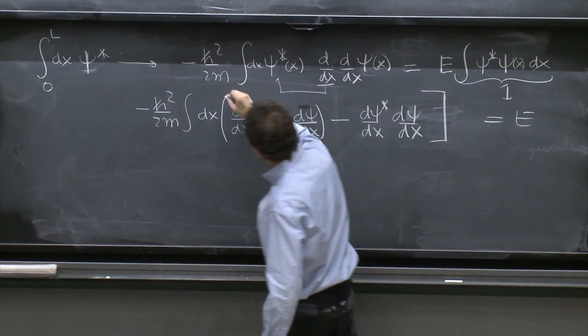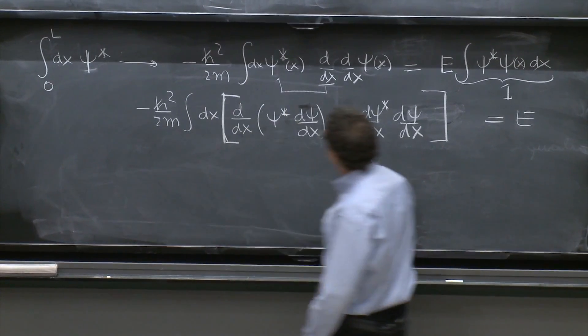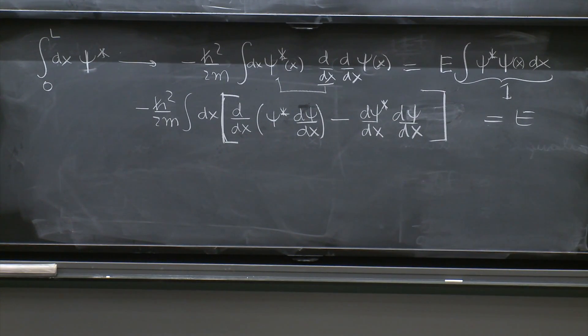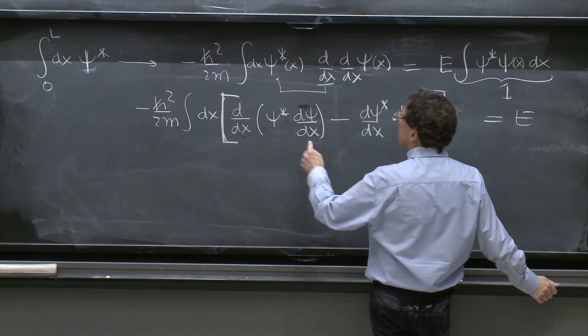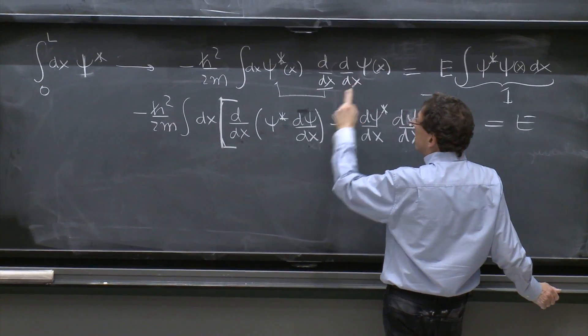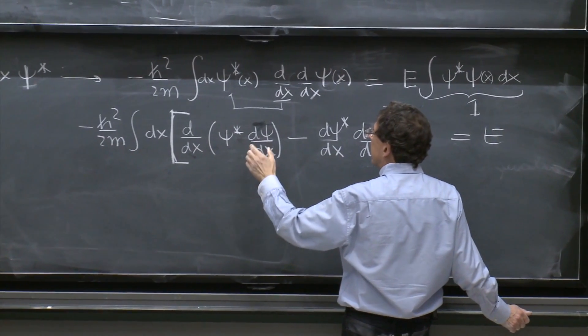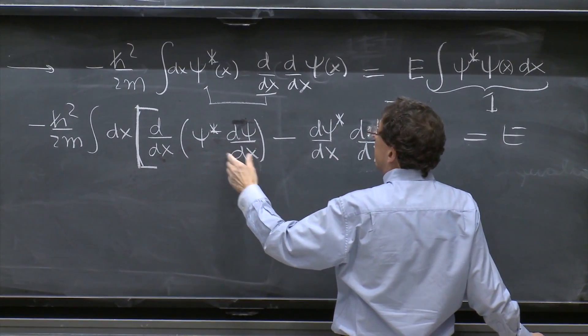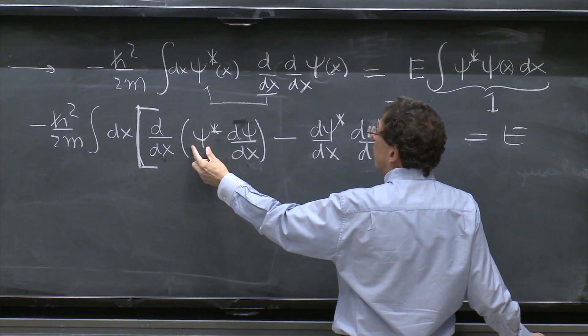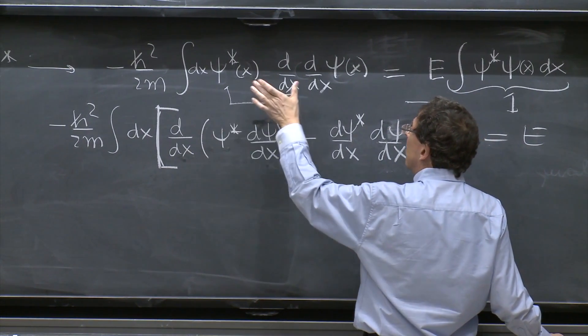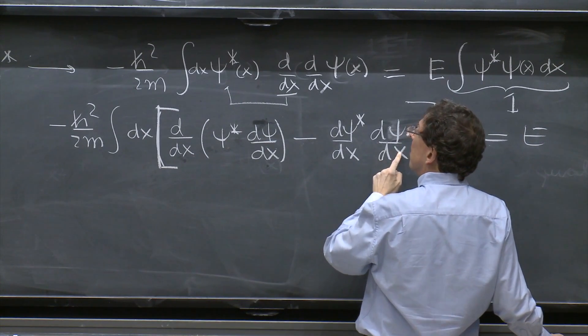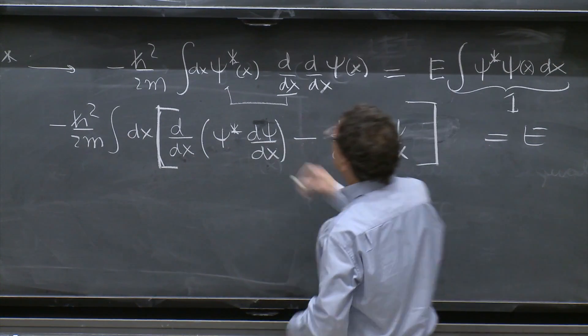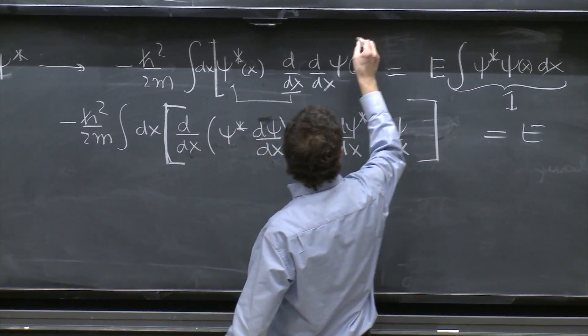So d/dx minus dψ star/dx dψ/dx. I'll do it like this with a nice big bracket. So that's what I did. I rewrote that ψ star d second of ψ as d/dx of this quantity, which gives me this term from the derivative acts on the second factor that is not present in the above line. Therefore, it must be subtracted out. So this bracket has replaced this thing.